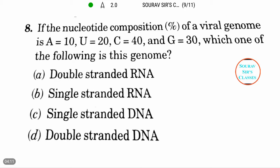The question we have asked here is the nucleotide percentage composition. The percentage has been given: adenine equals 10, uracil 20, cytosine equals 40, and guanine 30.